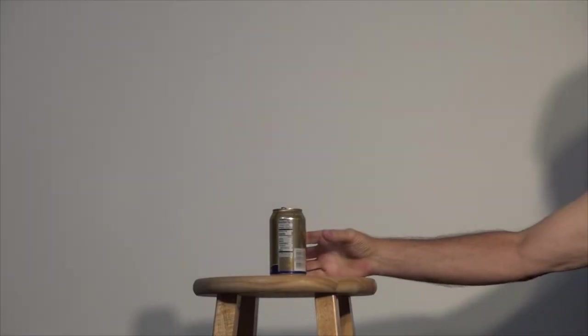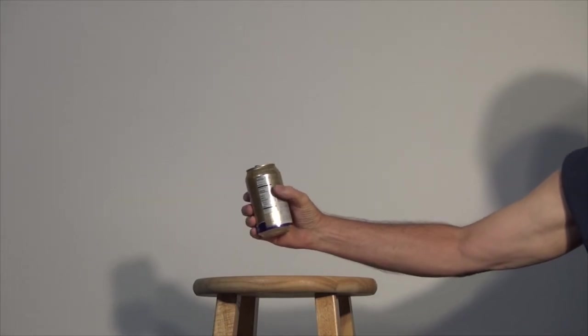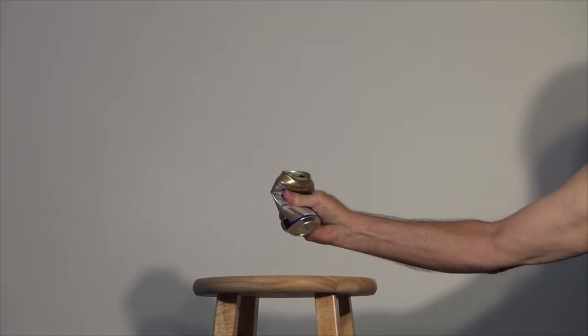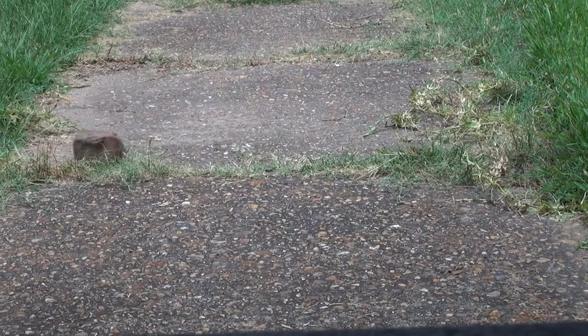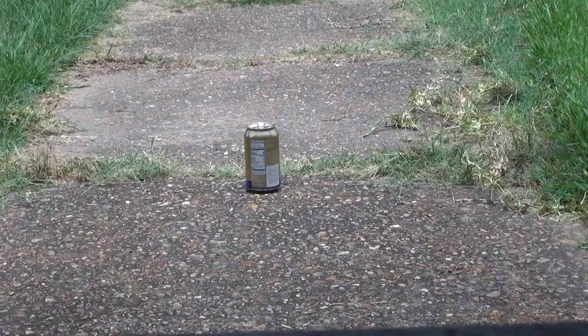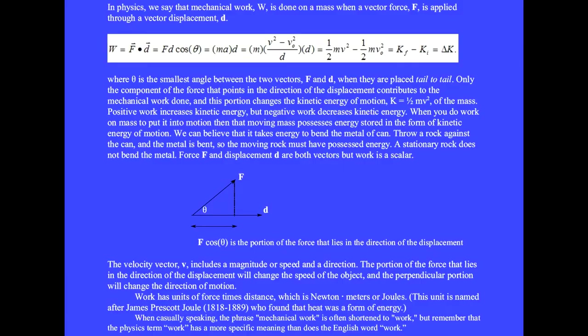We can believe that it would take energy to bend the metal of a can. Throw a rock against the can and the metal will bend, so the moving rock must have possessed energy. The stationary rock does not bend the metal. Force and displacement are vectors, but work is a scalar.